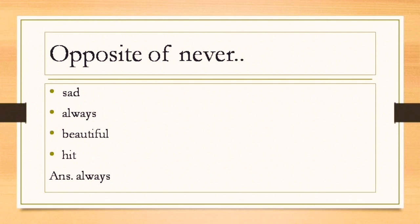Now opposite of never. What is the opposite of never? Always. So option B is the answer. Opposite of ugly. What do you mean by the opposite of ugly? That means you have to find the contrast of it, the contrast of the word. So what will be the answer? Beautiful. The opposite of ugly is beautiful. So option C is the correct answer.